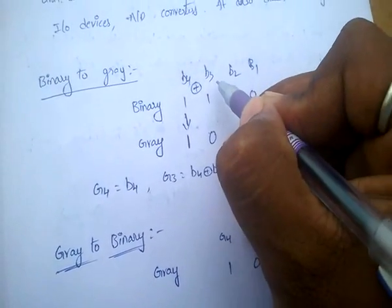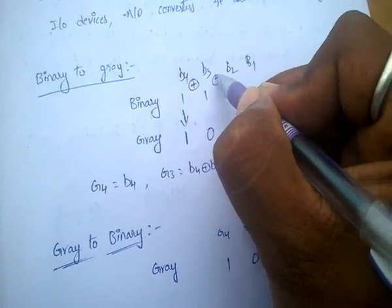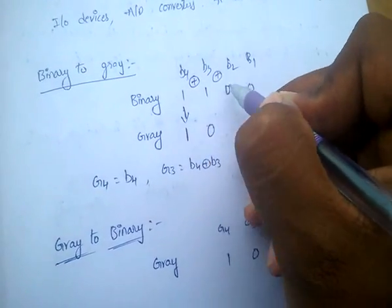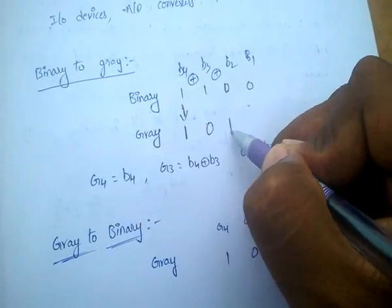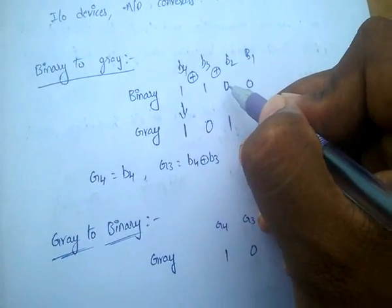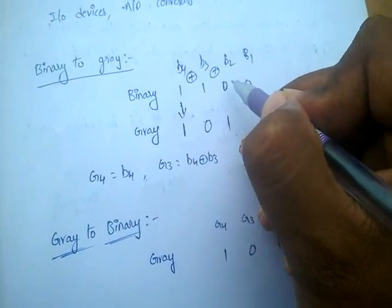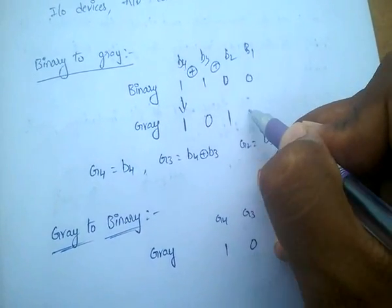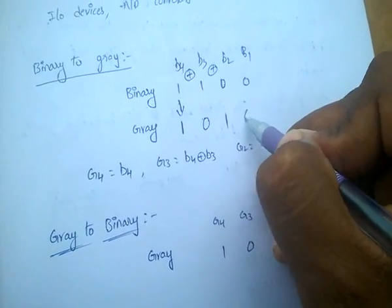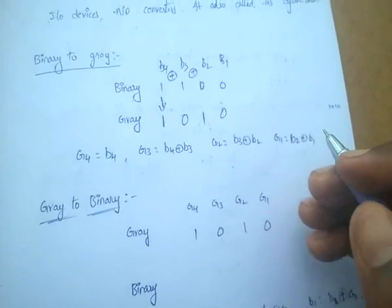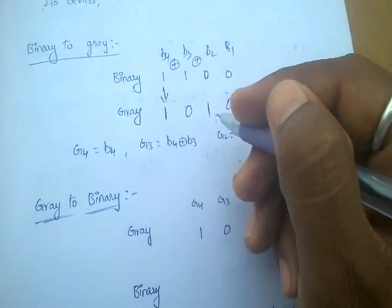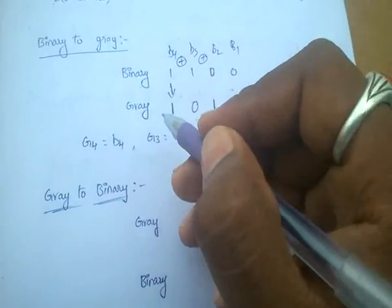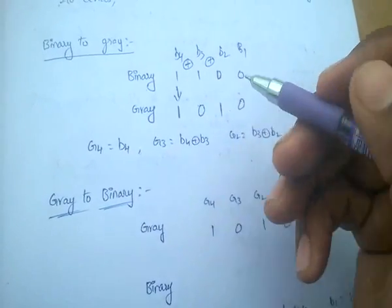Find the exclusive-OR between 1 and 0, which gives 1. For exclusive-OR between 0 and 0, the result is 0. Likewise, we can convert binary to gray.